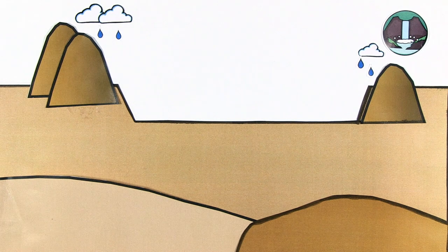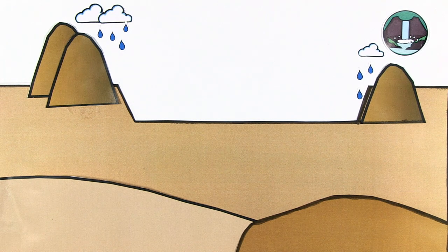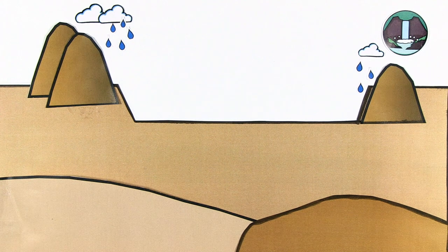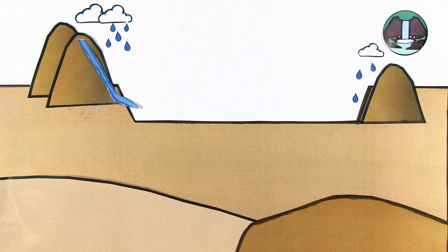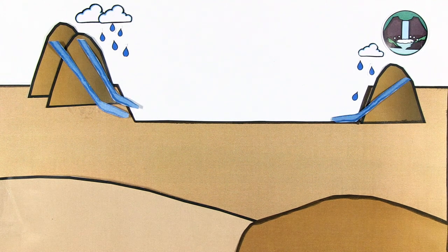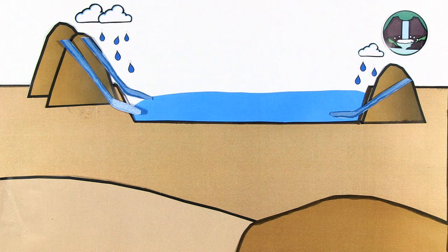Macrocatchment harvesting systems are characterized by comparatively large catchment areas to collect runoff water, for example from mountainous regions. These systems harvest water from long slopes and external catchments.